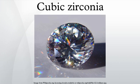It is sometimes erroneously called cubic zirconium. Because of its low cost, durability, and close visual likeness to a diamond, synthetic cubic zirconia has remained the most gemologically and economically important competitor for diamonds since commercial production began in 1976. Its main competitor as a synthetic gemstone is the more recently cultivated material, synthetic moissanite.